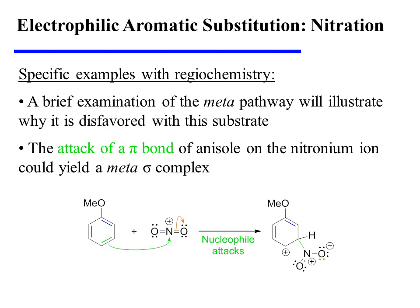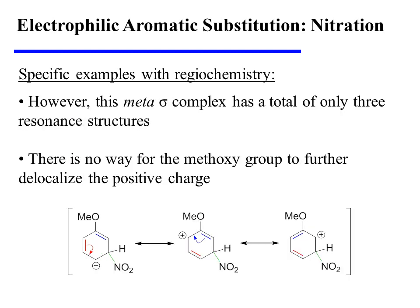A brief examination of the meta-pathway will illustrate why it is disfavored with this particular substrate. Attack of a green pi-bond on the nitronium ion places the nitro group in the meta-position relative to the methoxy group. When we examine the resonance stabilization for this sigma complex, we notice that there are only three resonance structures, and there is no way for the methoxy group to further delocalize the positive charge. As a result, this sigma complex is less stabilized, so the meta-pathway has a higher energy intermediate and is therefore less favorable.